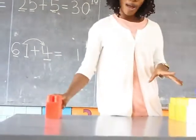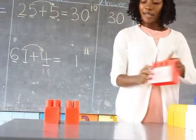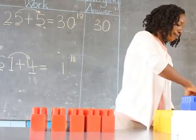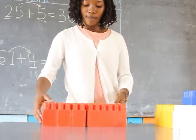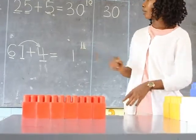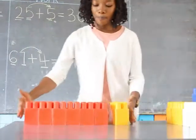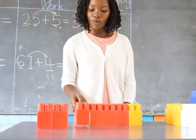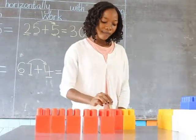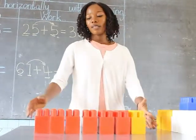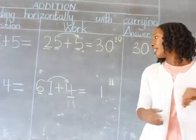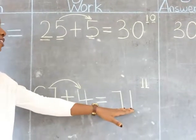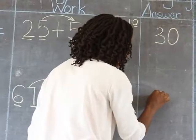Let's count together: 1, 2, 3, 4, 5, 6. Here are 6 building blocks, and here is 1 building block. Putting them together and counting: 1, 2, 3, 4, 5, 6, 7. So 6 plus 1 equals 7. I'm writing 7 in the tens position. The answer is 71. I'm shifting my answer to the answer place — 71.